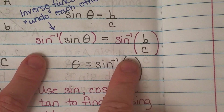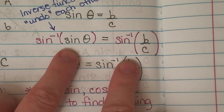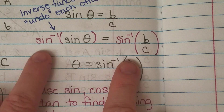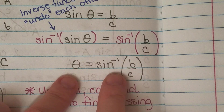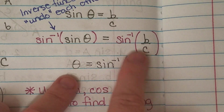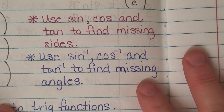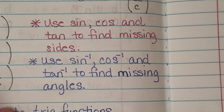If I take the sine inverse of both sides, that's going to allow me to get rid of this sine function. On the left side, it's going to leave me with angle theta — it basically cancels this other one out. On the right side, I'm going to still have the sine inverse of my side ratio, and this is going to be something I plug into my scientific calculator to get my angle. In general, you use sine, cosine, and tangent when you're finding the missing sides of right triangles, and you use inverse sine, inverse cosine, and inverse tangent to find the missing angles.